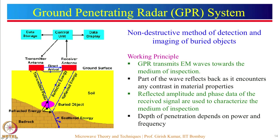The transmitter antenna transmits a signal at a particular frequency and power level. This signal penetrates the ground, reaches the buried objects, and because the object has different dielectric properties compared to the soil, some of the signal gets reflected back and is received by the receiver antenna. The received signal is processed using a processing unit and displayed. The processing primarily involves finding out the depth of the object. The depth of penetration depends on the transmitter power level and frequency of operation.